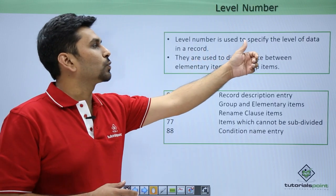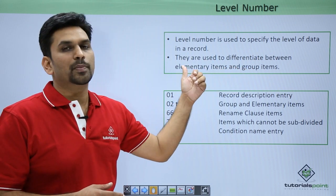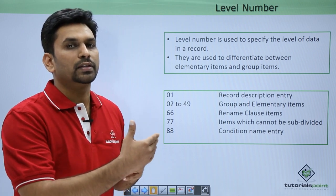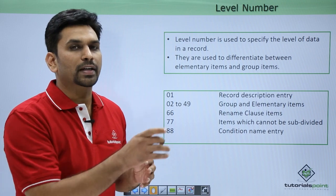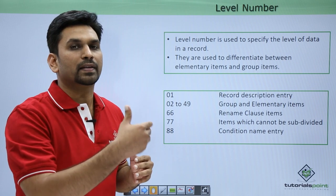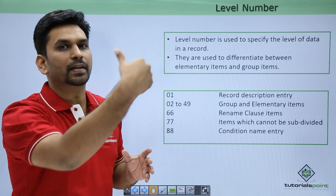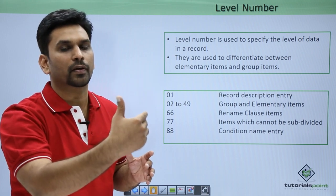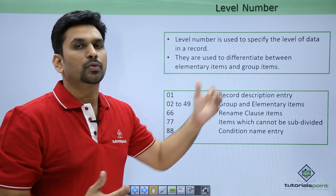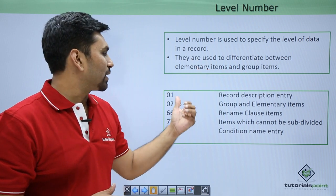Level number is used to specify the level of data in the record. They are used to differentiate between elementary items and group items. Suppose if a student has a field that is known as student marks — that is an independent field, that is an elementary field. And suppose if you want to declare an address variable, inside address we can have street, flat number, city, state, and country. So they are group items. We can declare group items as well as elementary items.